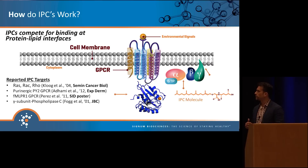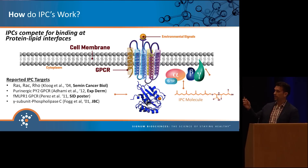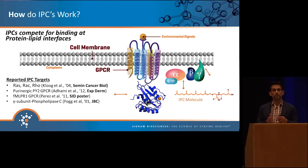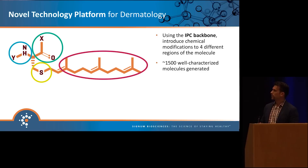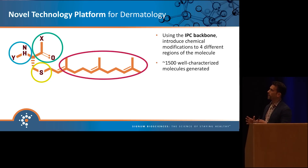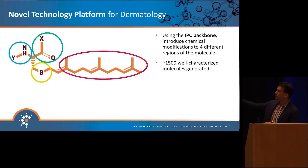One interesting finding, while studying this with Dr. Richard Granstein at Cornell Weill — specifically the effects of IPCs with the P2Y2 receptor — was that the IPCs were not just modulating or inhibiting G-protein coupled receptor signaling of inflammation, but also toll-like receptor signaling. That got us to go back into the lab and think about the IPC chemical backbone. We took the four distinct regions of the molecule and started generating different derivatives by making modifications to the lipid tail, the carbonyl, the head group, and the sulfur itself.